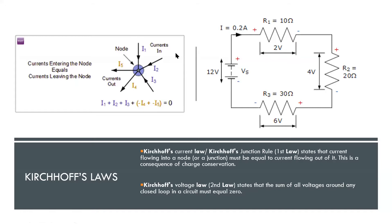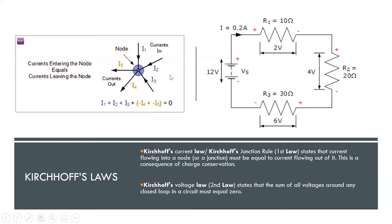The right figure shows that the current I will be 0.2 ampere — the current will be constant in the circuit. This figure is used to explain the voltage law, while the left figure explains the current law. So these two are separate figures representing the two laws.